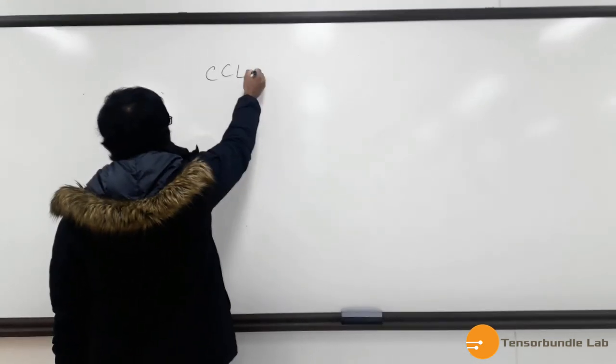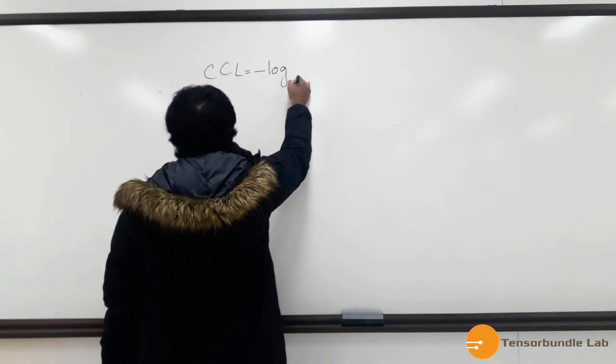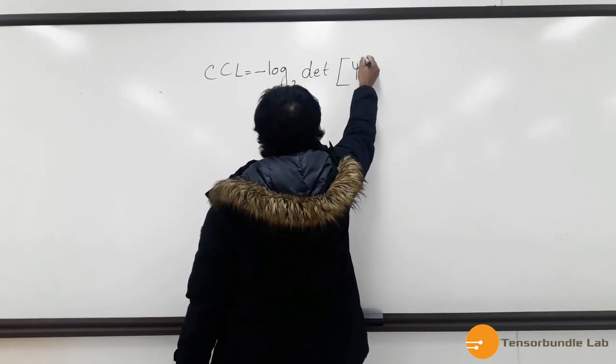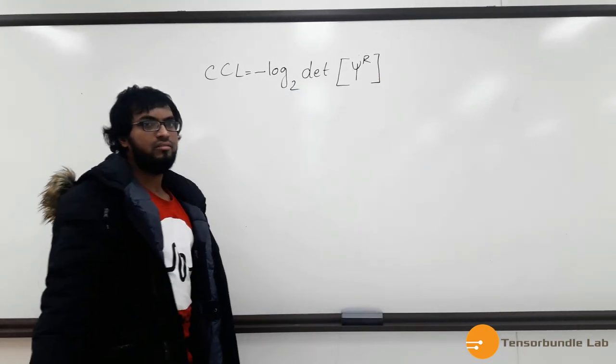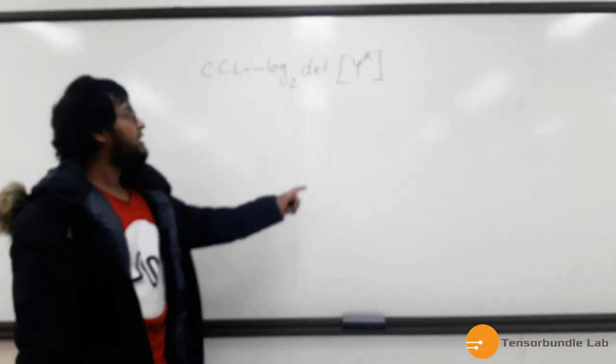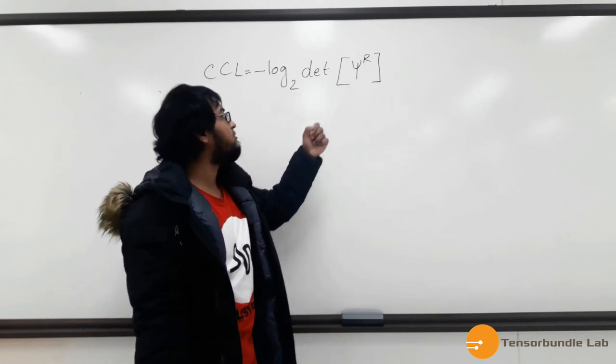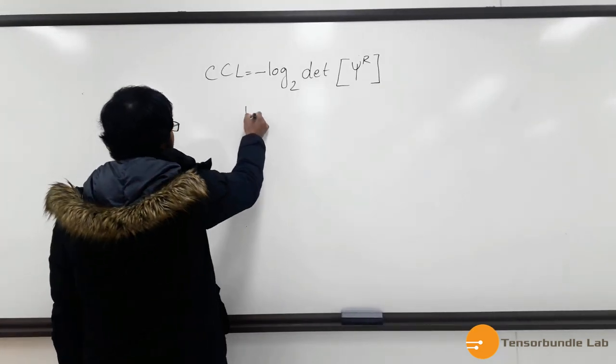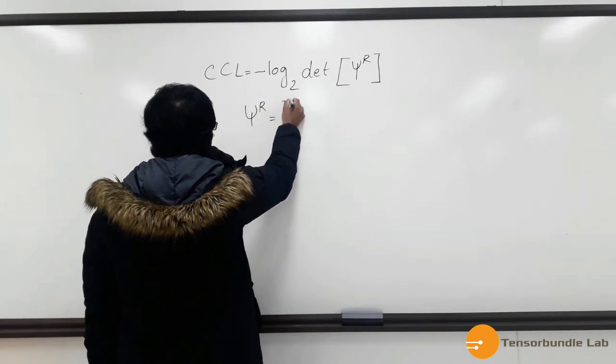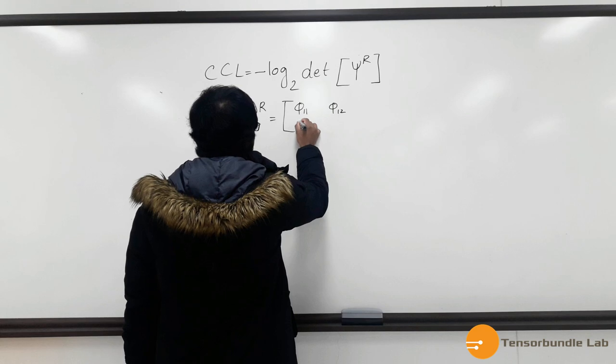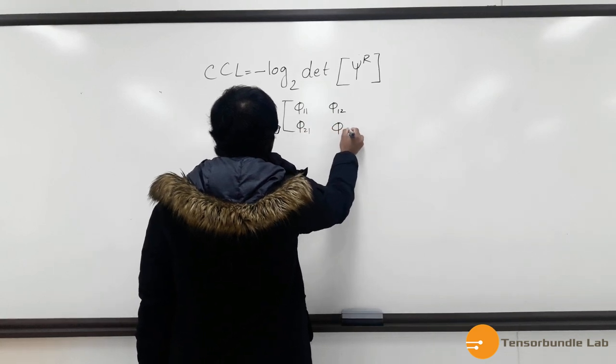CCL is basically defined as minus of log of 2 times determinant of a matrix. It is side R matrix. Now this is a 2x2 matrix, which is the correlation matrix of receiving antennas in a system, which can be defined as ρ11, ρ12, ρ21, and ρ22.